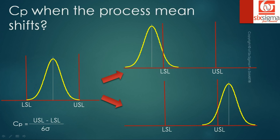Now let's look at the formula for CP. Do you think CP alone would be able to detect this kind of process shift, which is critical to the business? The answer is no, because CP only takes into account two widths and computes a ratio. Even if your process is completely outside the specification limits, CP will still give you a numeric response — but it won't be doing any good to the process.